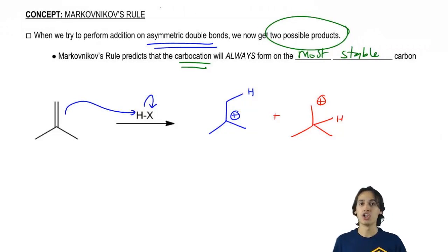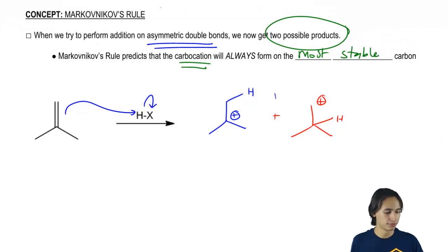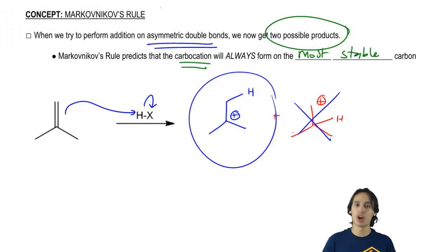If you guys remember, carbocations are stabilized by R groups. So the more R groups that I can pile around that carbocation, the better. So one of these is actually going to be much, much more stable and that's going to be the blue one. So it turns out the red one is so unstable that it would never even form. And that's Markovnikov's rule for you. Markovnikov's rule is saying that you're only going to get the blue one or the one that has the most stable carbocation.